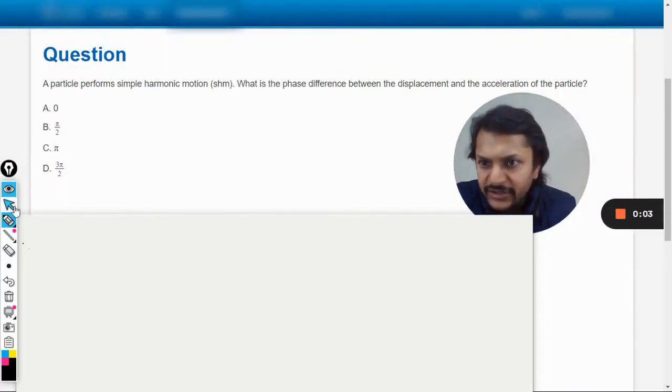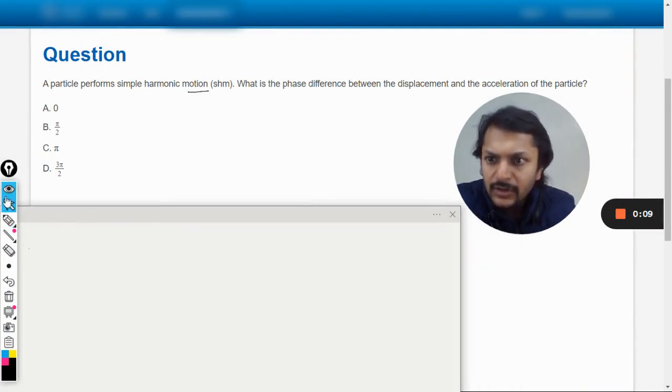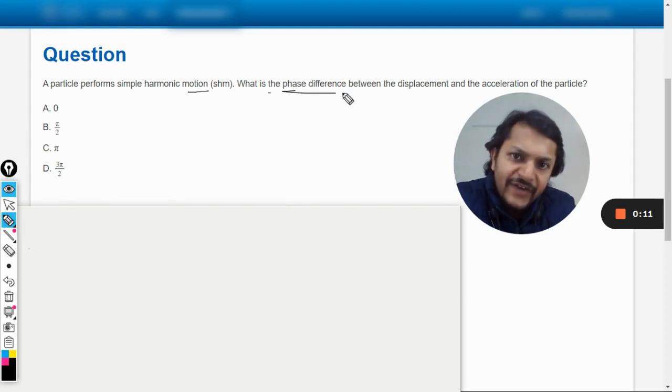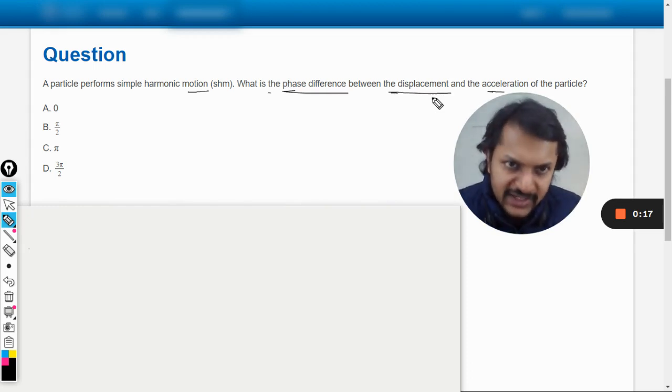Okay dear students, let us see what is there in this question. A particle performs simple harmonic motion. What is the phase difference between the displacement and the acceleration? Okay, so my students, I don't think that there is any easy method for this.